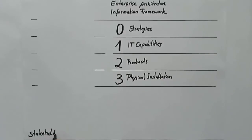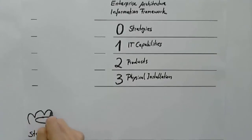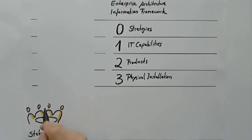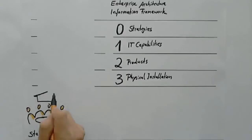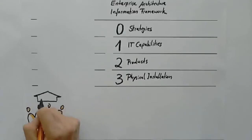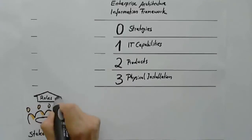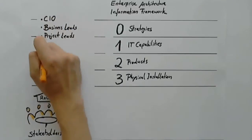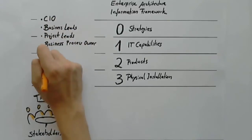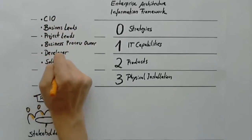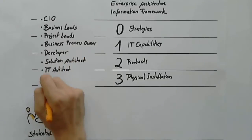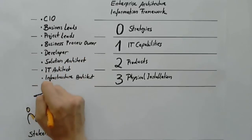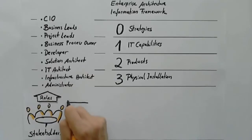When we talked earlier about the challenges in business and IT, we started with the stakeholders. These stakeholders have roles in the enterprise which we can relate easily with the information framework. Each role has to meet specific targets in the company and thus has slightly different views of the enterprise. This leads us to what we call viewpoints.